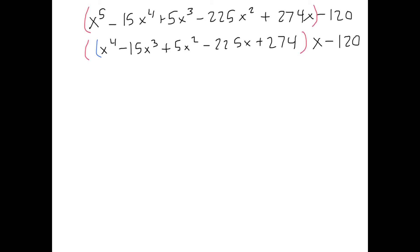Now, let's take a look at these terms. They all have an x in it. Let's factor out that x. That leaves us with x to the 3rd minus 15x squared plus 5x minus 225, all times x plus 274 times x, again, minus 120.